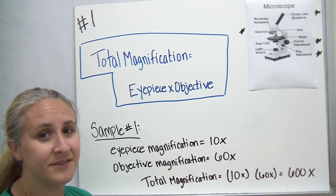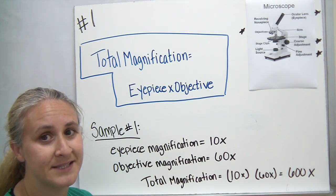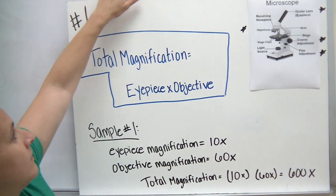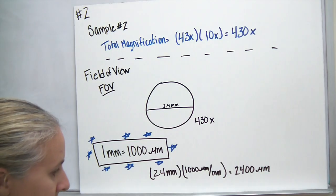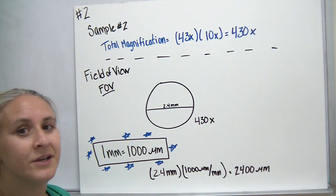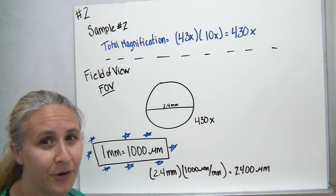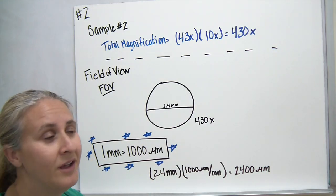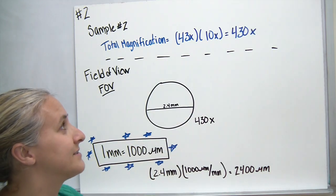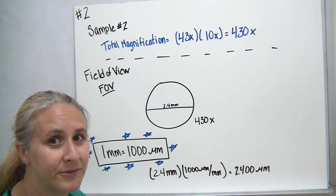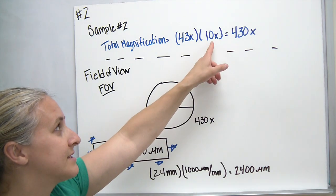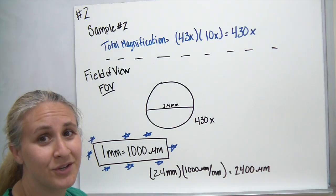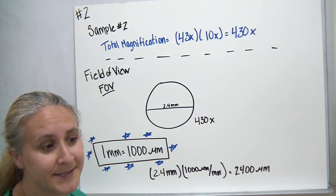Why don't you pause the video for a second and try the second sample in your note packet. The second sample has you calculate the total magnification of a microscope that has an objective of 43x and an eyepiece of 10x. When you multiply them together, you should have gotten 430x.